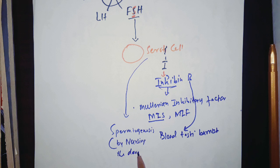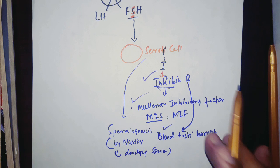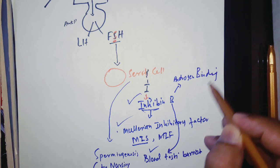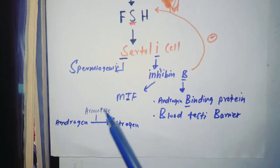From the B we can also remember that Sertoli cells secrete androgen binding protein. This inhibin B can only inhibit FSH. These cells also have an enzyme called aromatase which converts androgen into estrogen.